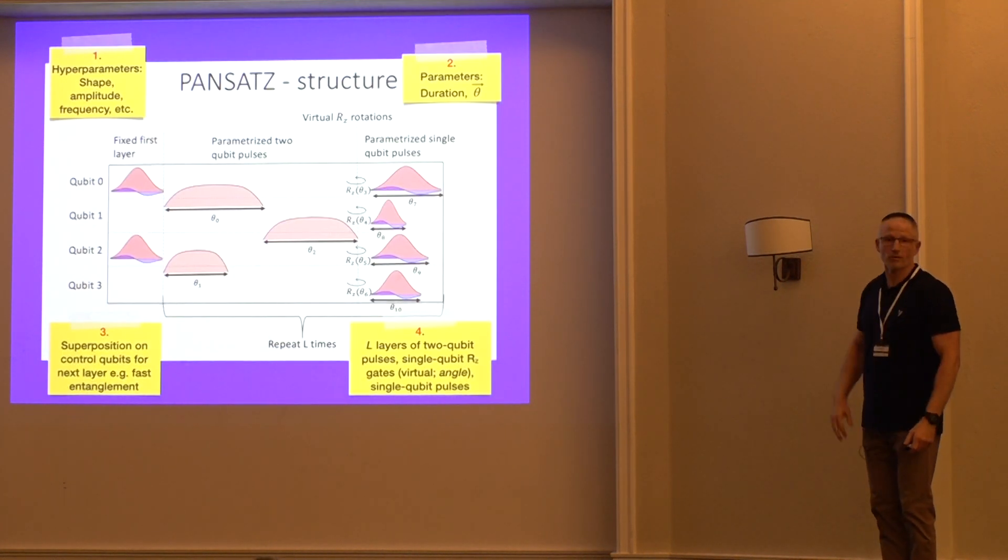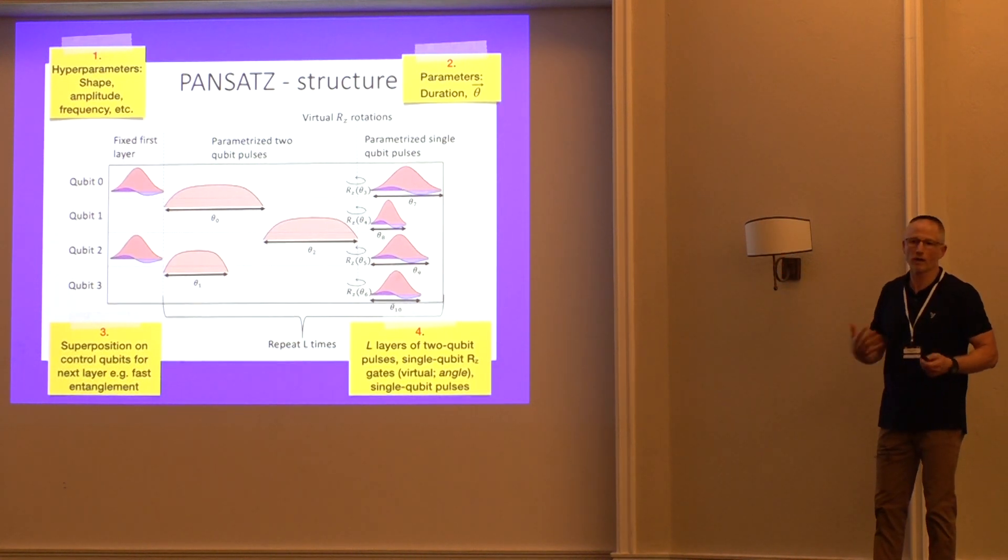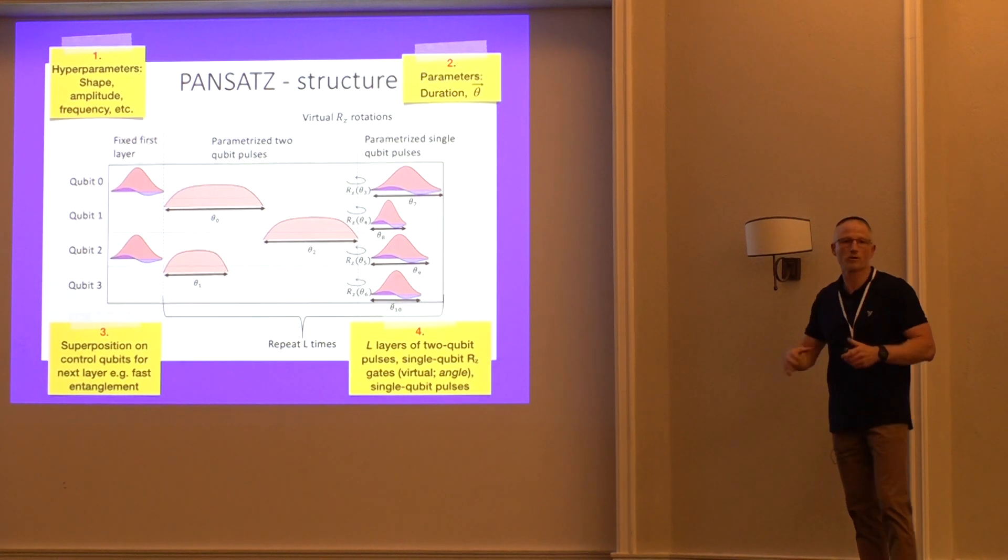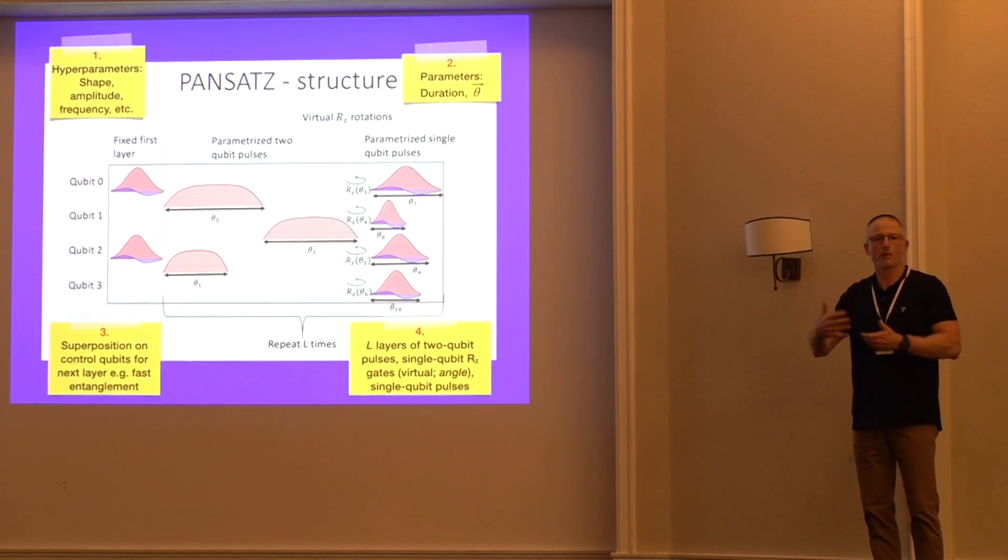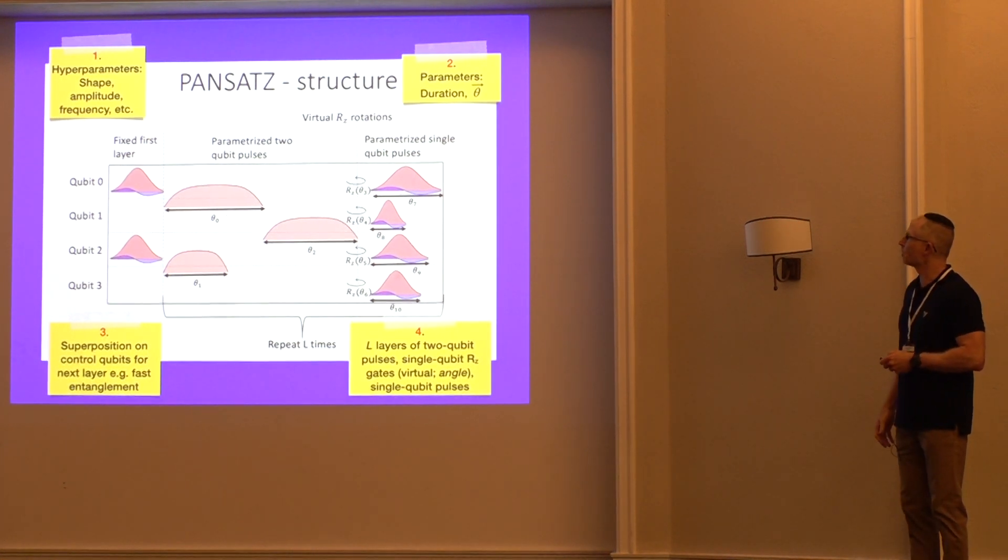This is the minute right here. This is how Dekel built his pansatz, his structured pansatz here. There are four different steps, if you will, in the construction of the pansatz. First, we have our hyperparameters. These are things that we fix ahead of time, a priori, like in machine learning, before we enter into the optimization loop. That includes the pulse shape, the amplitude, and the frequency of the pulses, and other parameters that we might want to specify.